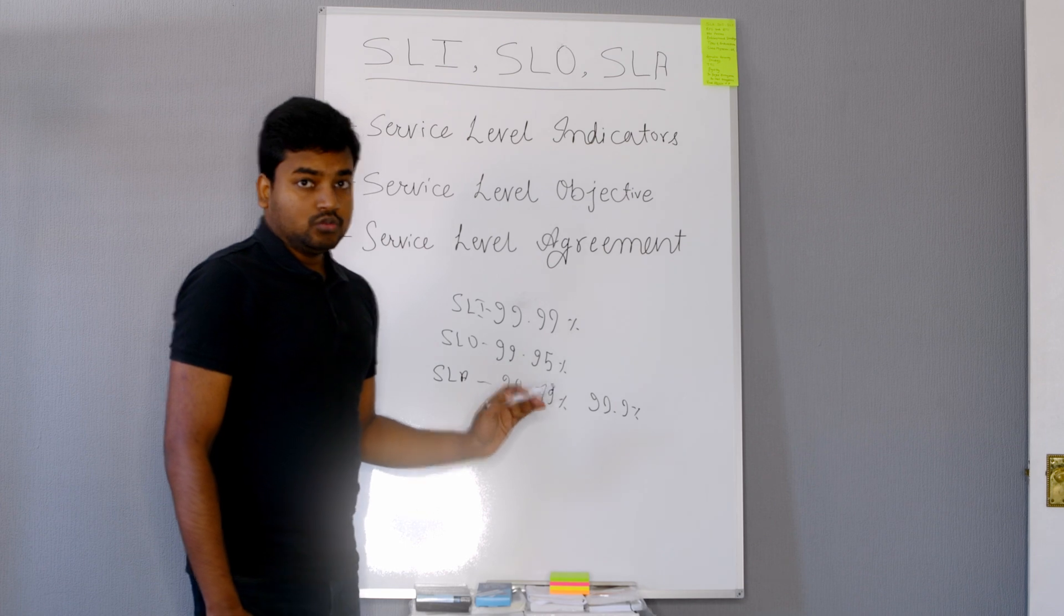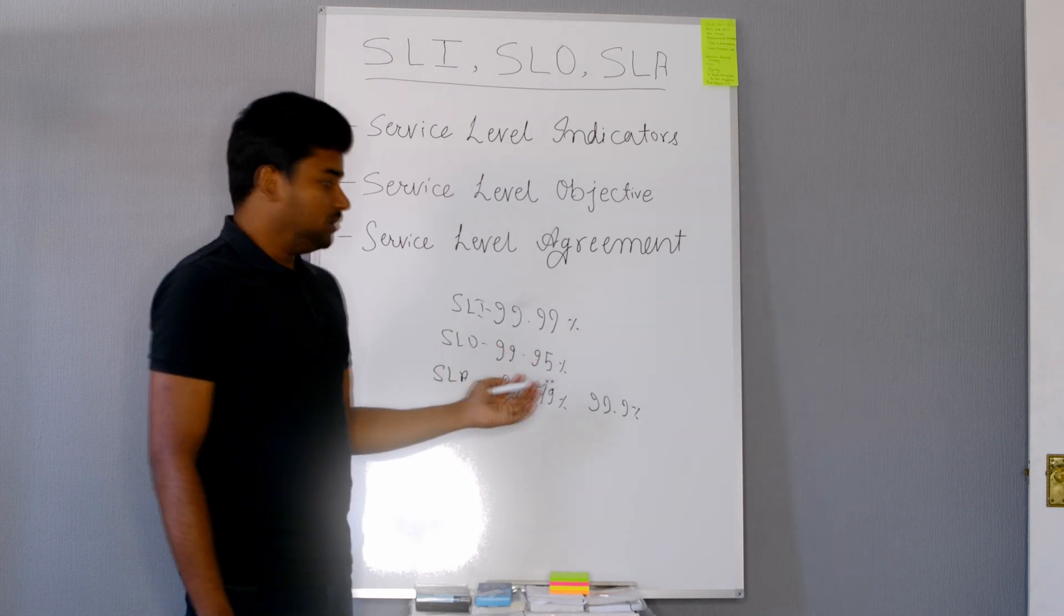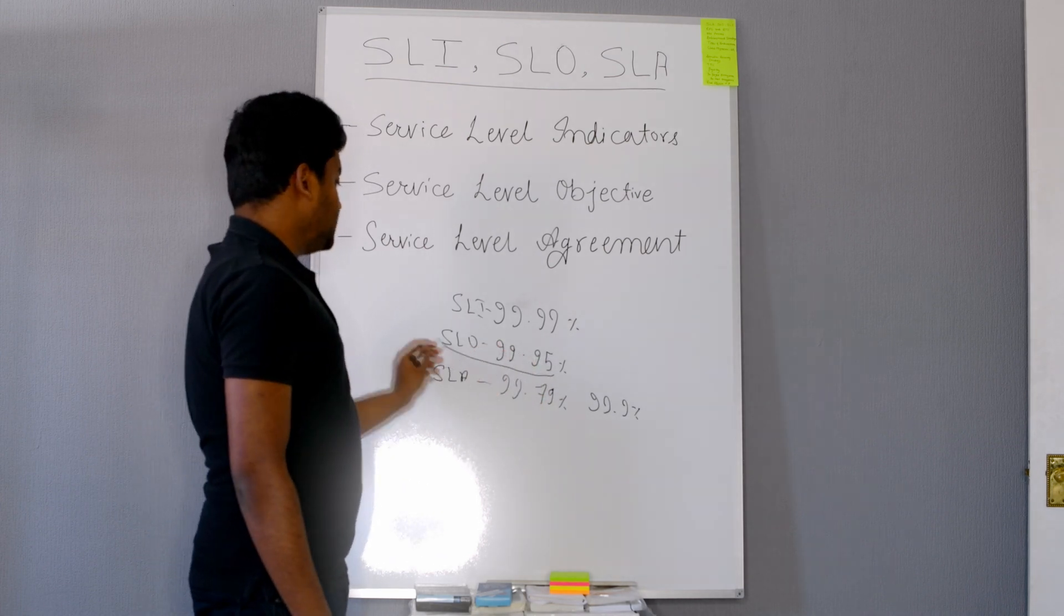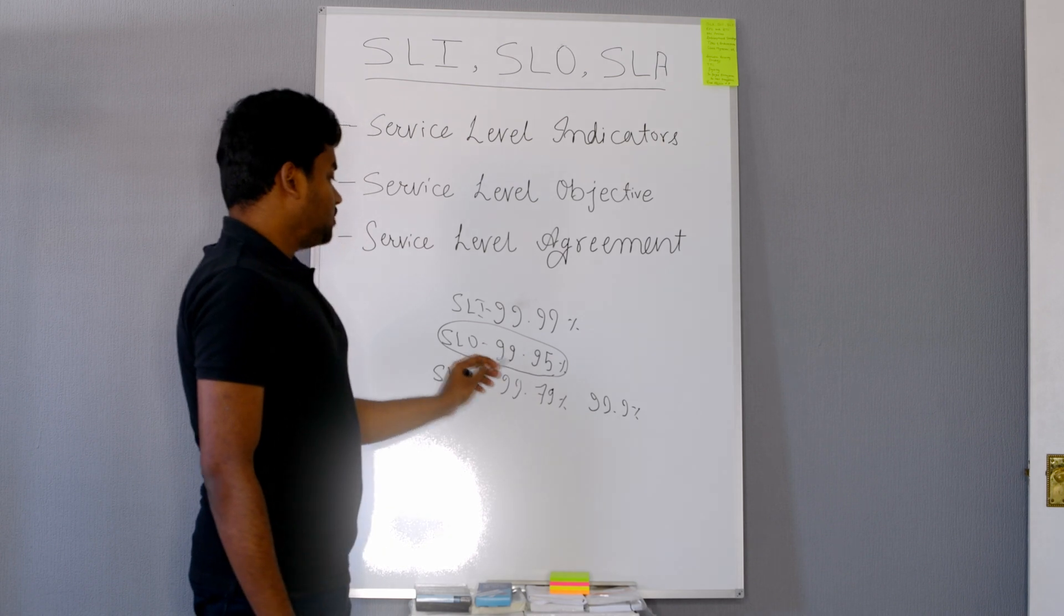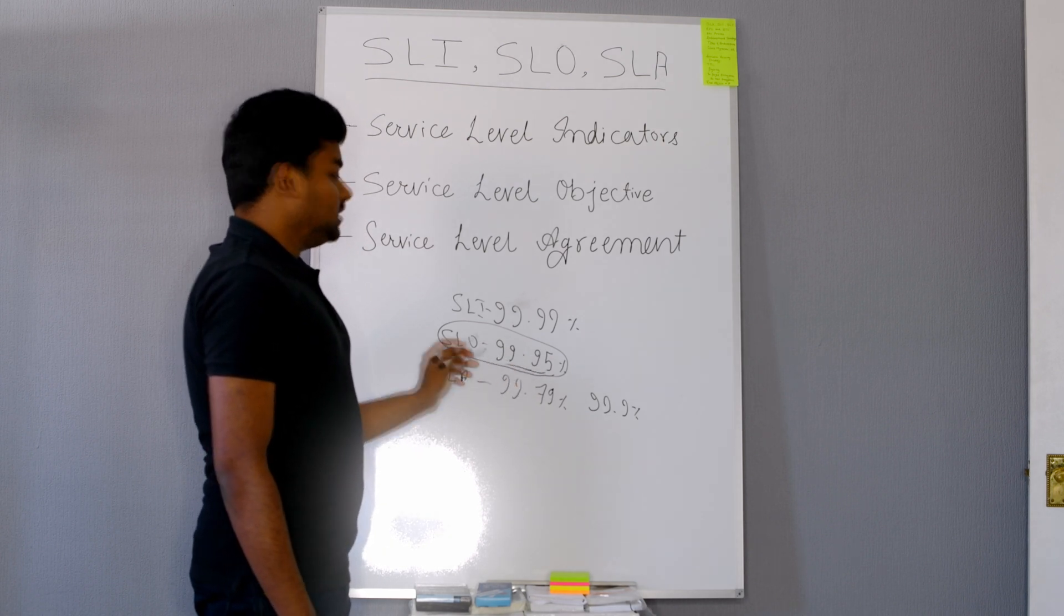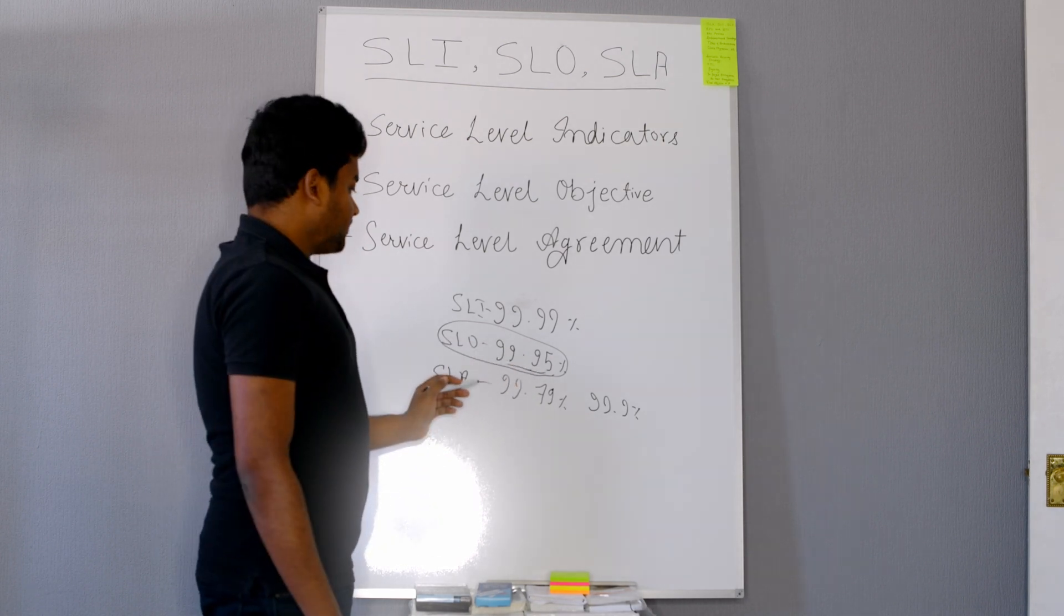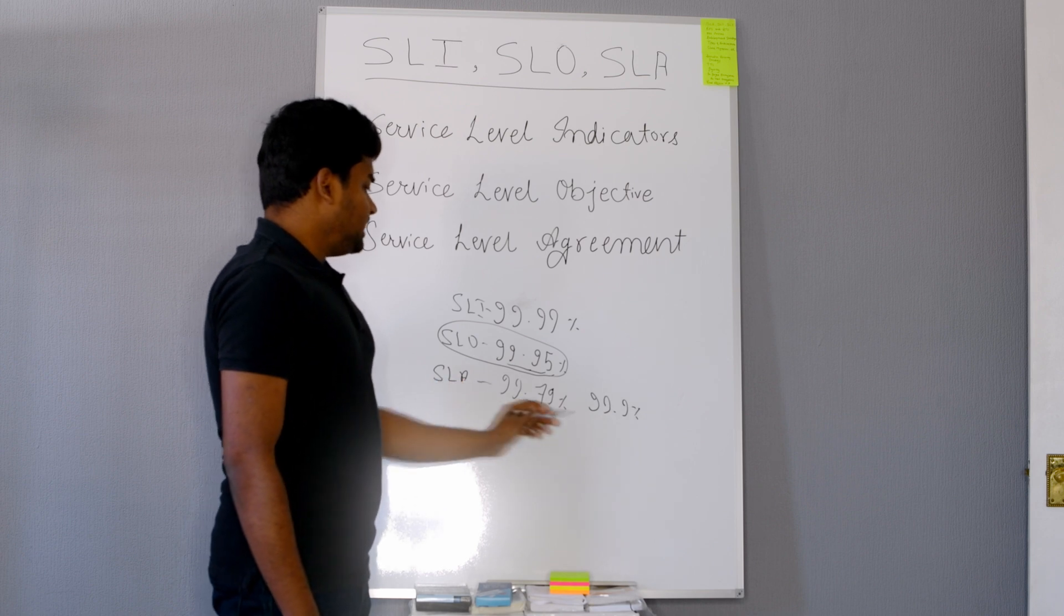The alerts I'm going to set up in the APM tool, those alerts will be based on my SLO numbers. If it is not meeting the objective, then give me the alert. And yeah, SLA always has the penalty.